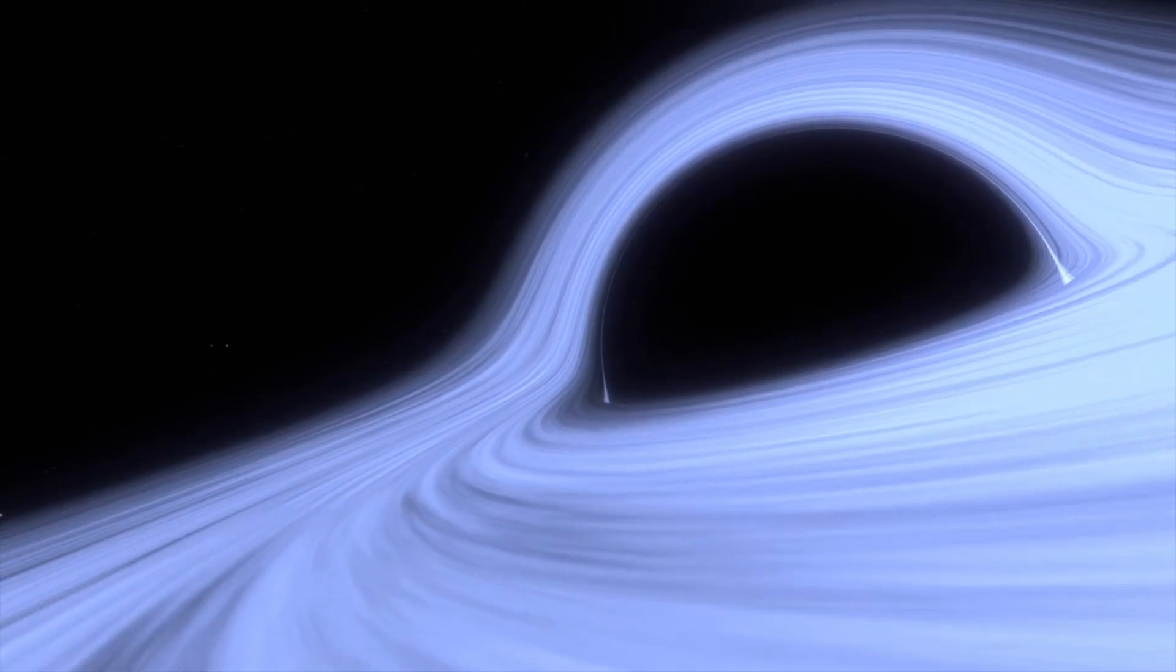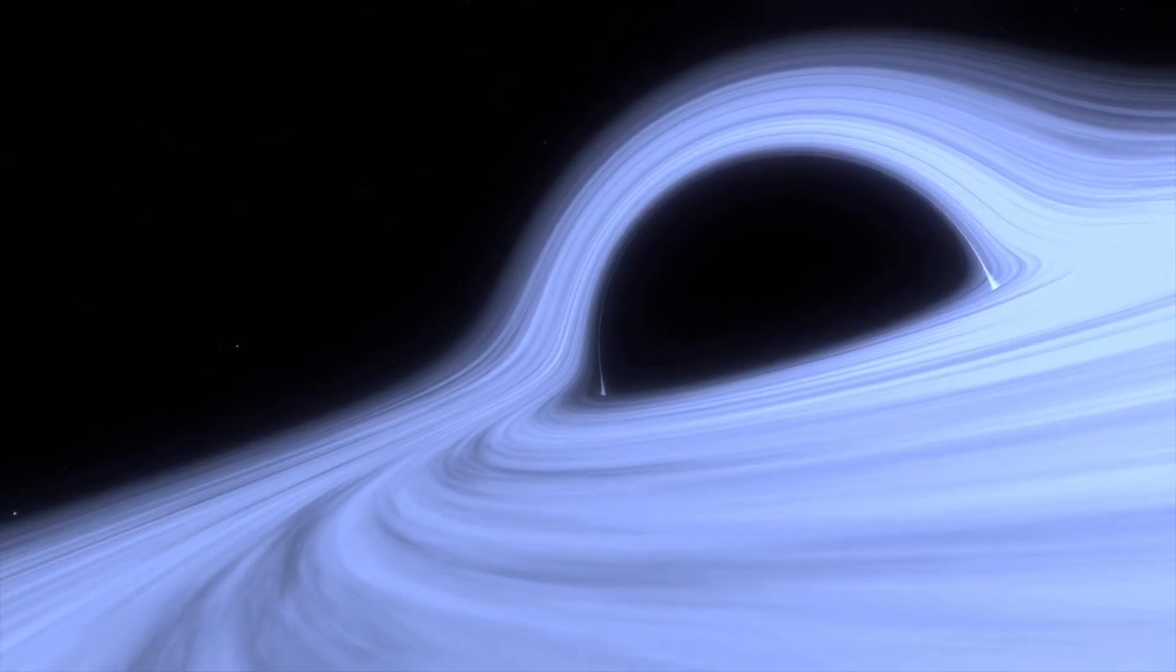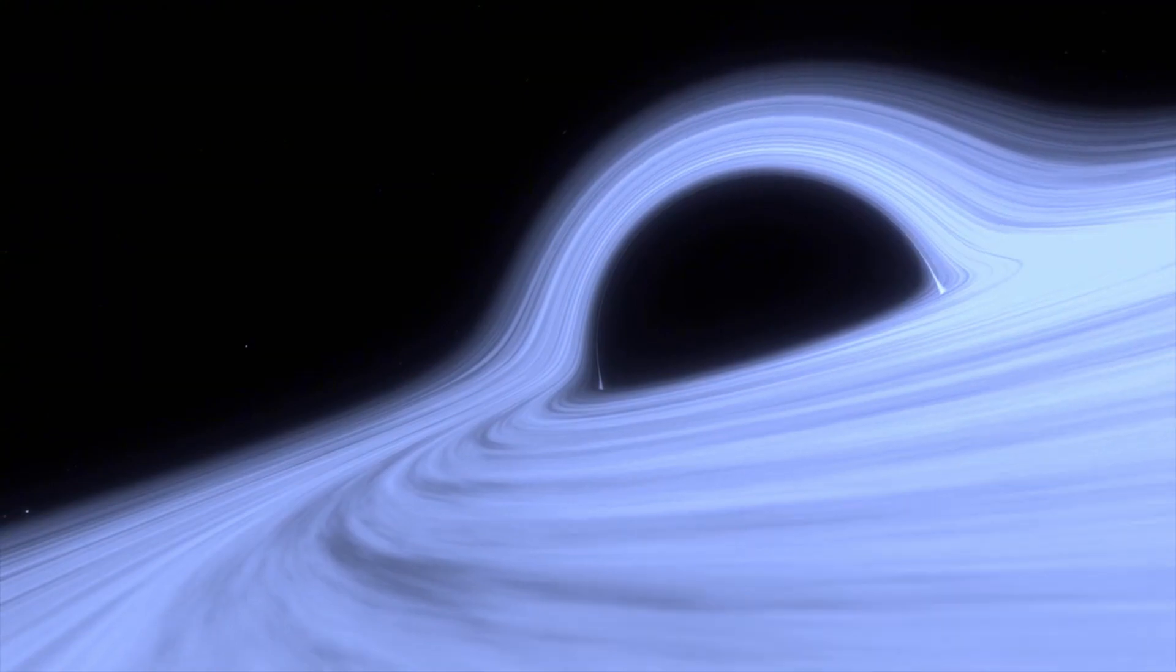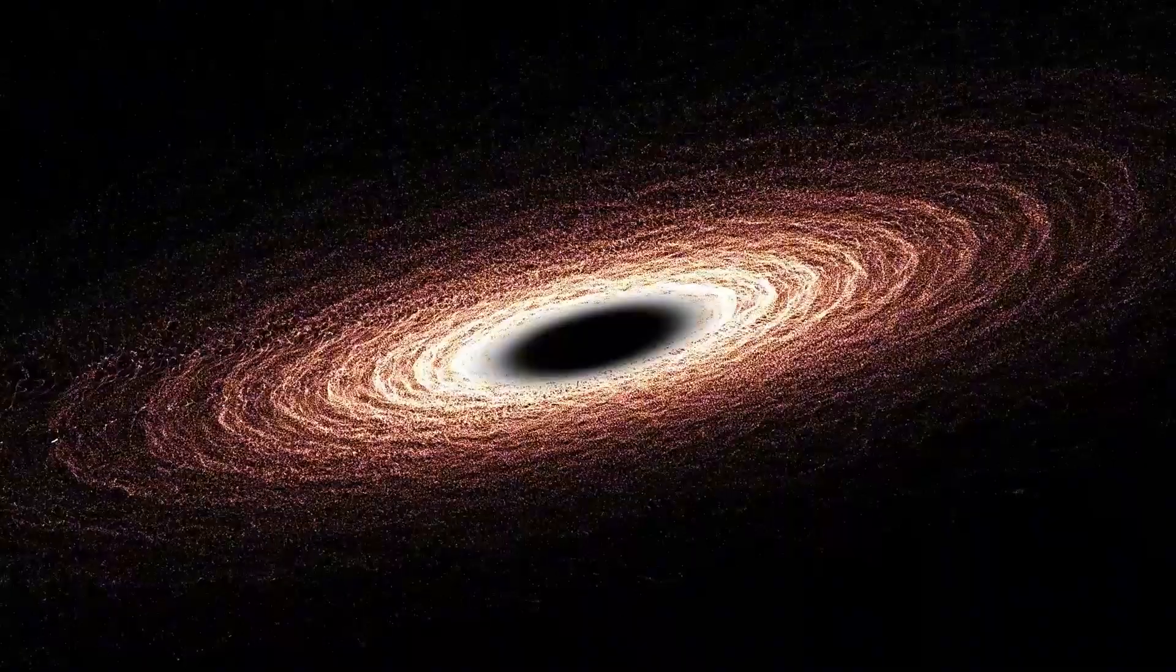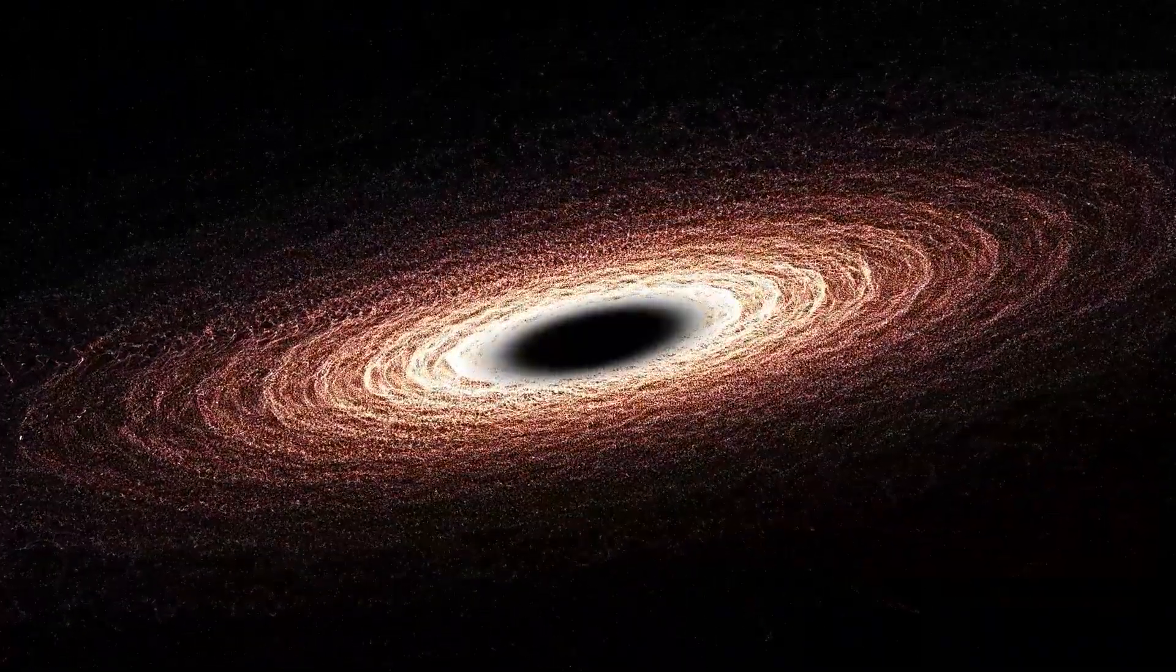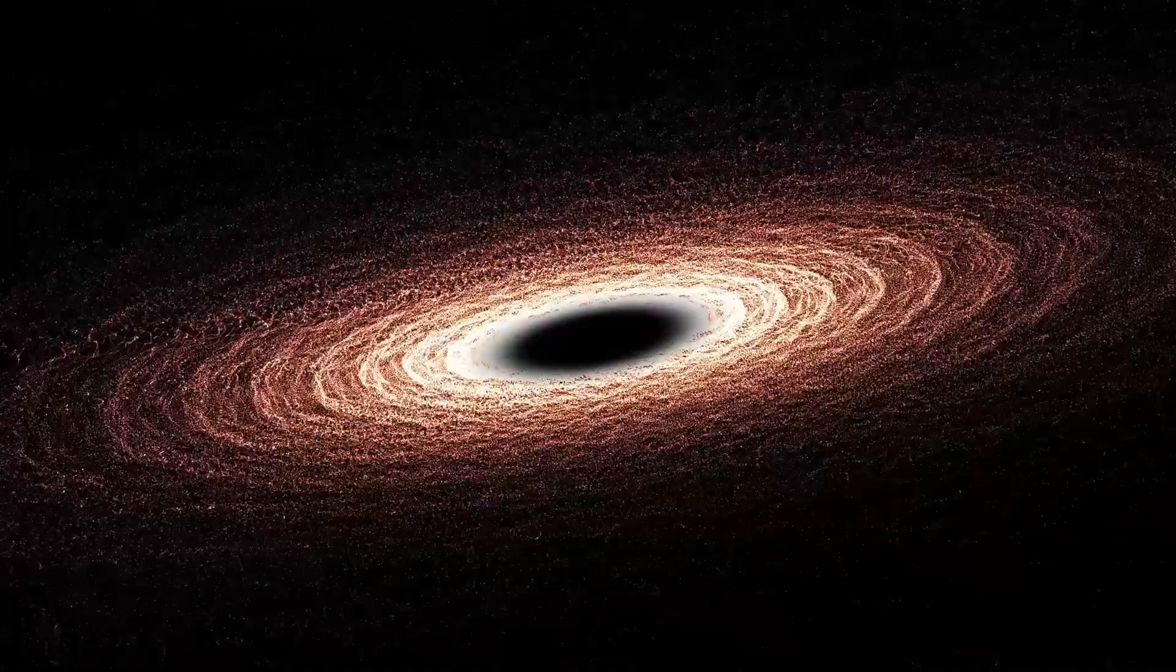As these mighty stars collapse, something strange occurs near their surfaces. Time itself starts to play tricks. From the perspective of someone far away, time appears to slow down near the event horizon, the point of no return for anything falling into a black hole. It's like the star's clock ticks at a different pace compared to ours.